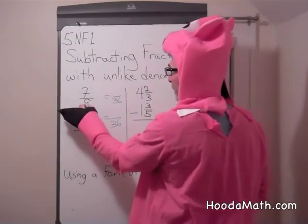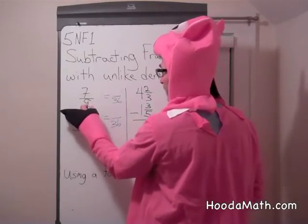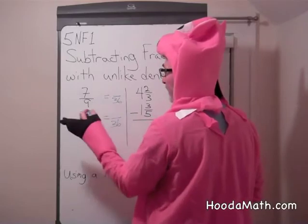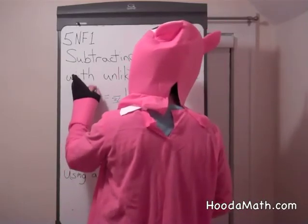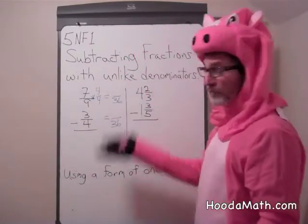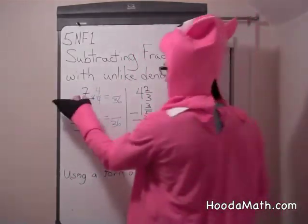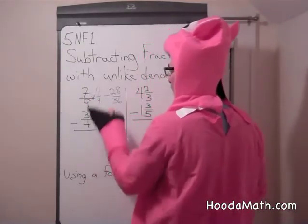To decide what to multiply 7/9 by, you look at the 9. How many 9's are in 36? There are 4. So we multiply by a form of 1, 4 over 4. 4 over 4 equals 1. 4 times 7 is 28, and of course 9 times 4 is 36.